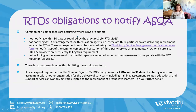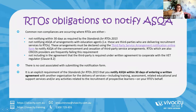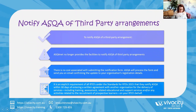Common non-compliances include RTOs not notifying ASQA within 30 days of any third party arrangements — including education agents and any other third party. ASQA have identified this and came up with an online notification form, along with a fact sheet about it. There is no cost associated with submitting the notification form — it won't cost you or the partner RTO anything — but it is an explicit requirement of the standards that you must notify ASQA of third party arrangements.